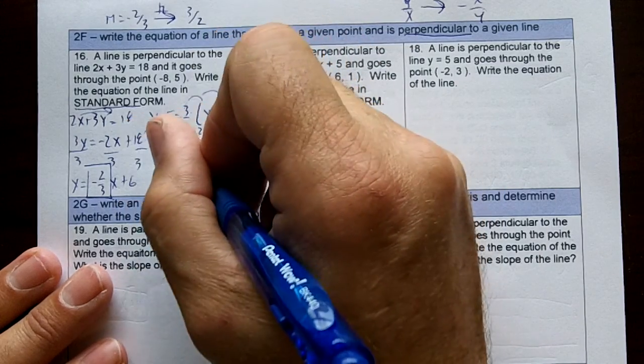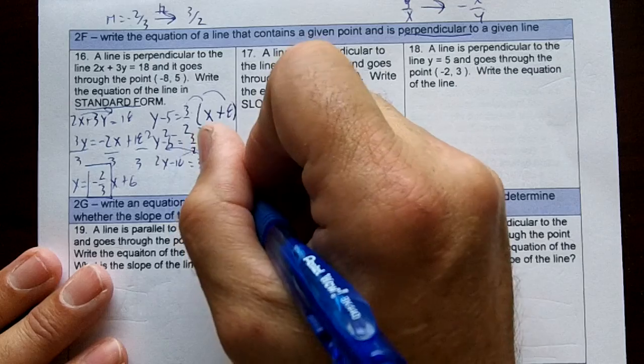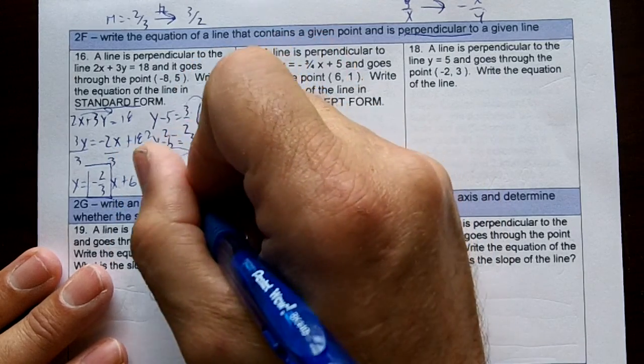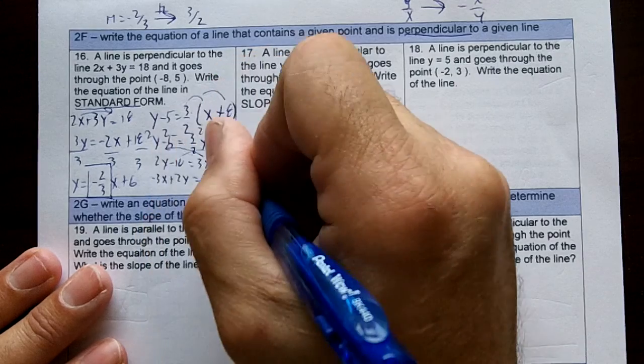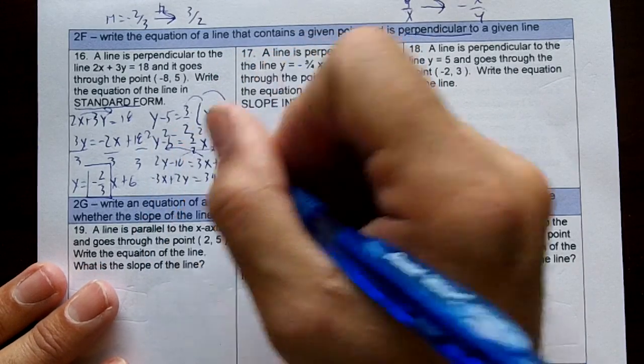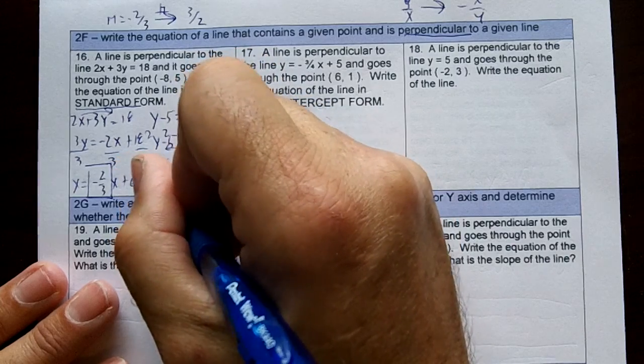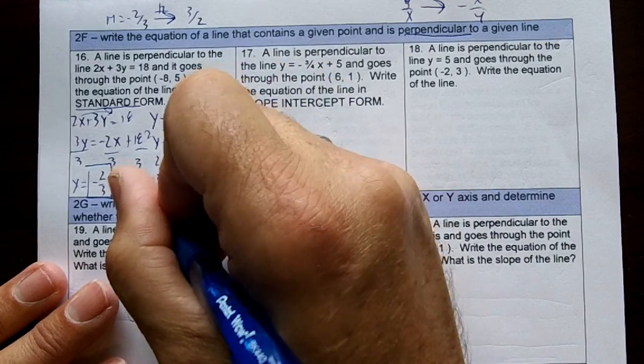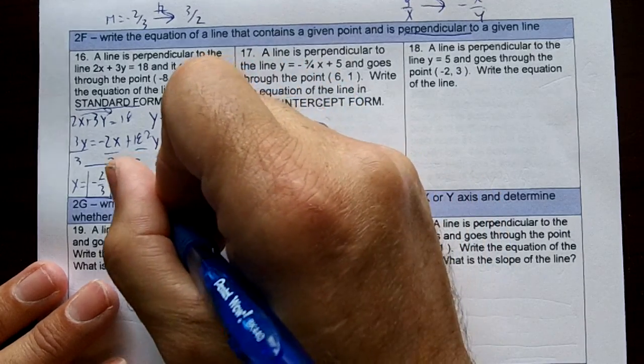My x goes to my left and my 24 goes to my right, so I'm going to get negative 3x plus 2y equals 24 plus 10 is 34, and then I'm going to switch all the signs. So 3x minus 2y equals negative 34. That's going to be my standard form.